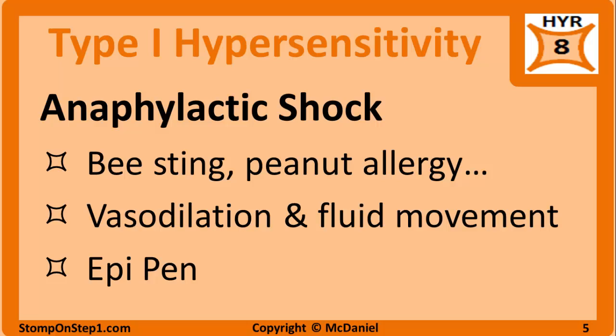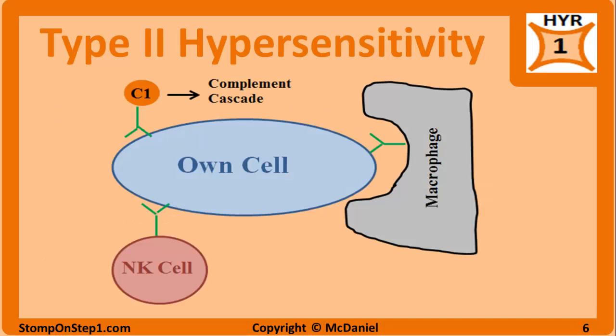Epinephrine activates alpha-1 adrenergic receptors to increase contractility of the heart and raise blood pressure via vasoconstriction. Type 2 hypersensitivity is the process by which IgG or IgM binds to a cell to cause injury or death — in other words, antibody-dependent cytotoxicity. This process has the same mechanism as normal humoral immunity, except it is targeted at the body's own cells instead of pathogens. The variable region of the antibody binds to the host cell, while the constant portion interacts with NK cells, complement, and macrophages.